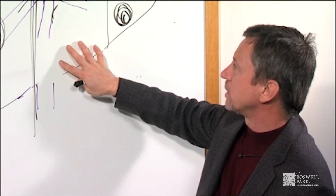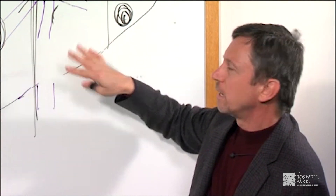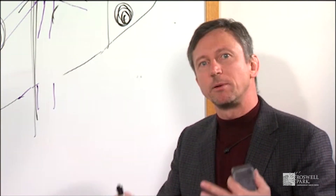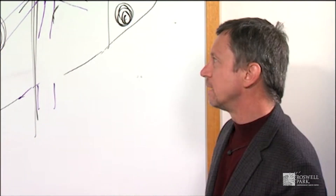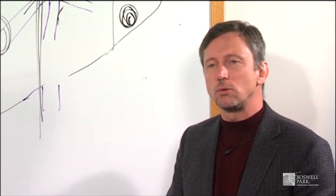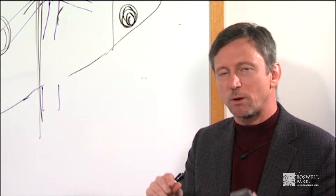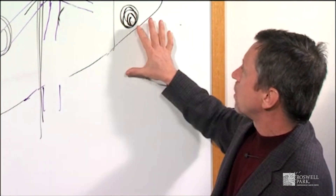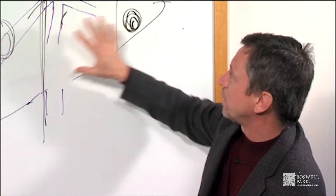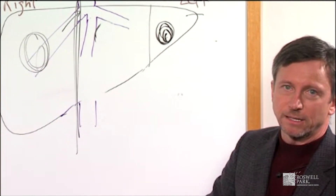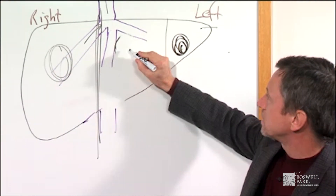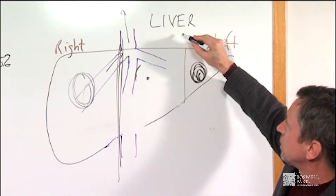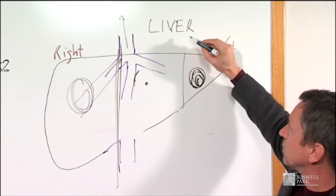We may go into these surgeries thinking we're going to do a liver resection but find something unanticipated. CT scans are great tools, but there may be very small tumors we don't see on a CT scan. So if we go in knowing about two tumors but find a tiny tumor we didn't know about, we can use microwave ablation, which we discussed previously.